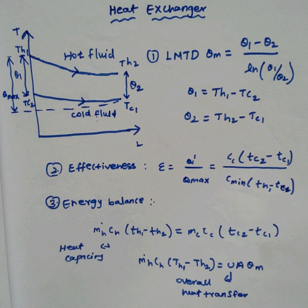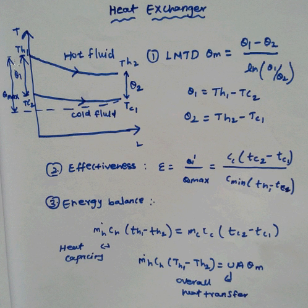The LMTD method means Logarithmic Mean Temperature Difference. The formula is: (TH1 minus TH2) divided by ln(TH1 divided by TH2), where TH1 minus TC2 gives the first temperature difference.